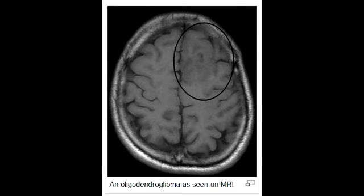What is Oligodendroglioma? Oligodendroglioma is a relatively rare, slow-growing tumor that most often occurs in the frontal lobe.